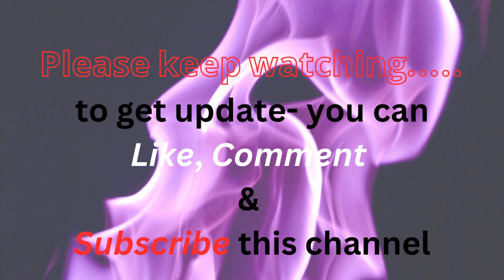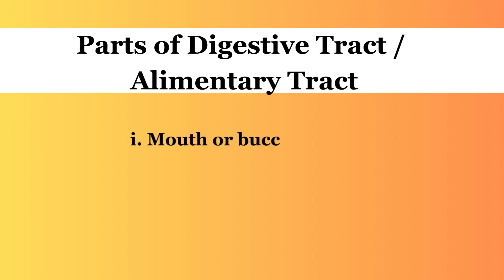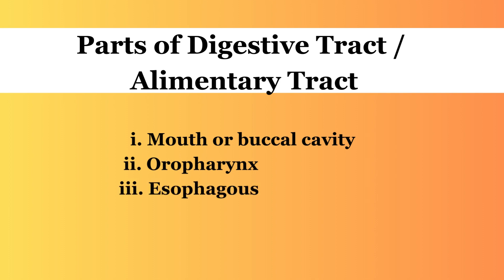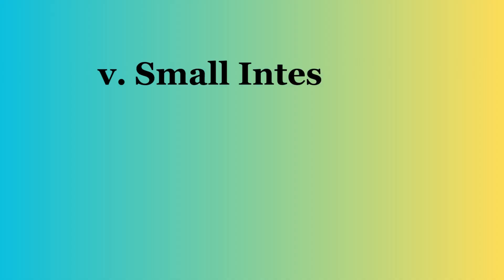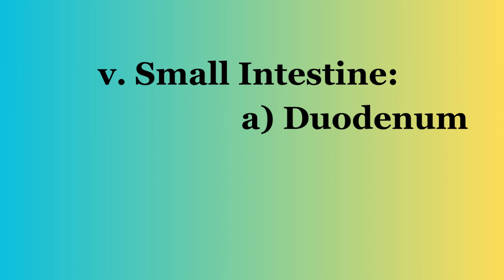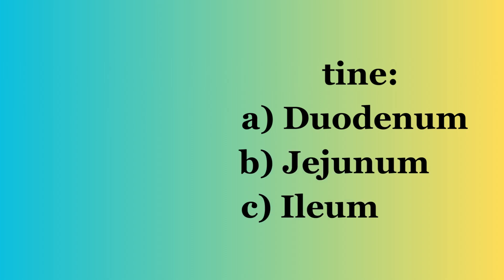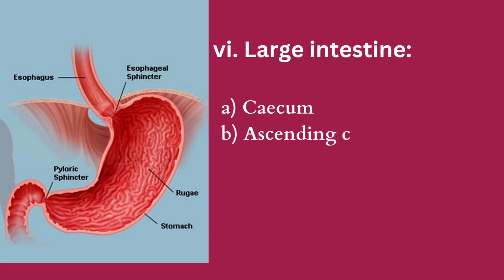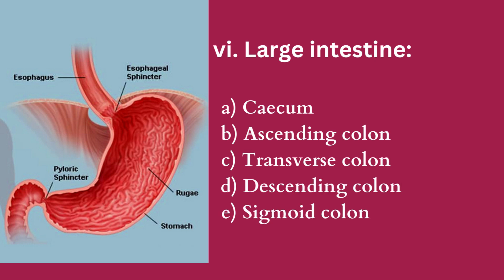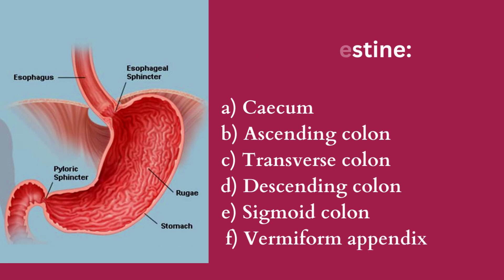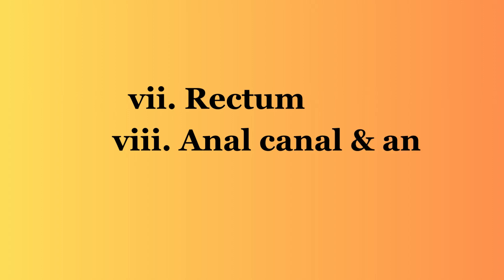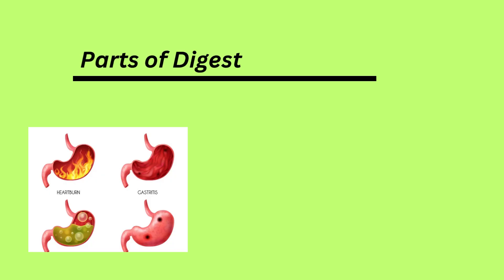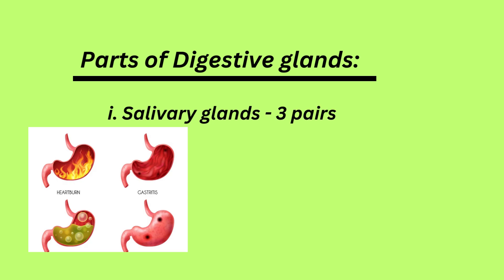Parts of Digestive Tract or Alimentary Tract: Mouth or Buccal Cavity, Oropharynx, Esophagus, Stomach, Small Intestine — A. Duodenum, B. Jejunum, C. Ileum — Large Intestine — A. Cecum, B. Ascending Colon, C. Transverse Colon, D. Descending Colon, E. Sigmoid Colon, F. Vermiform Appendix — Rectum, Anal Canal, and Anus.